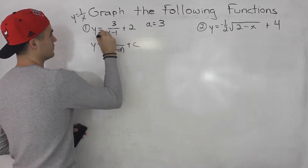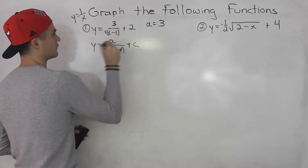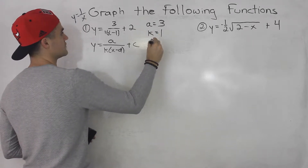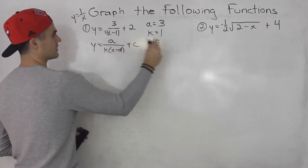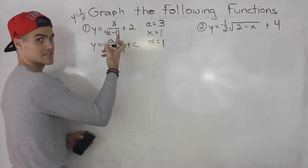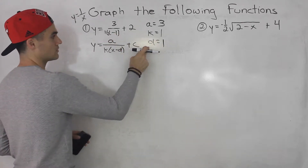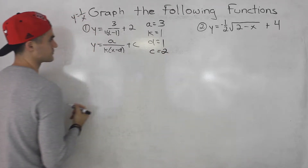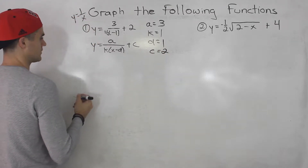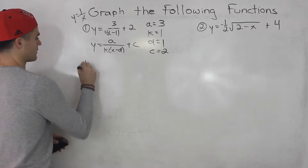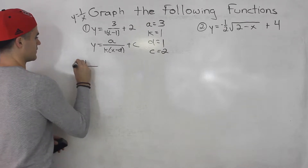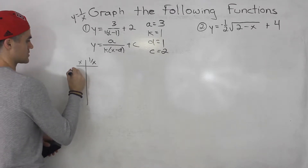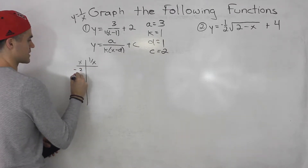The k value — there's a 1 in front, so the k value is just 1. The d value is positive 1, though remember it's always the opposite sign when dealing with the d value. Then the c value is 2. Now we're going to take the parent function 1 over x and work with its table of values.